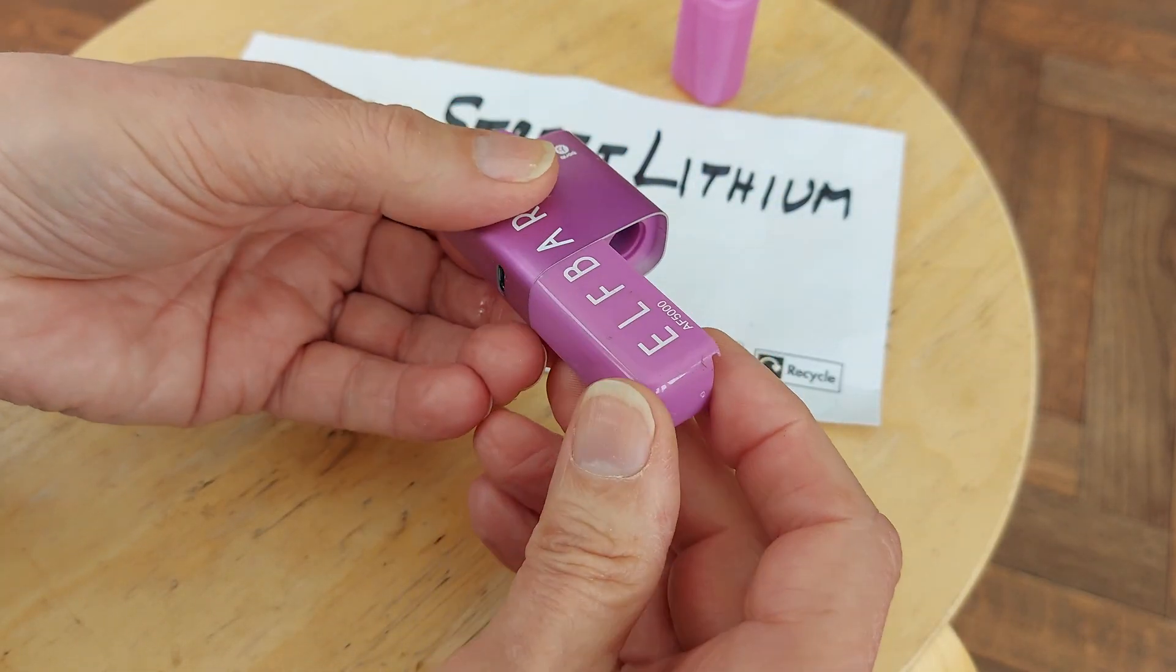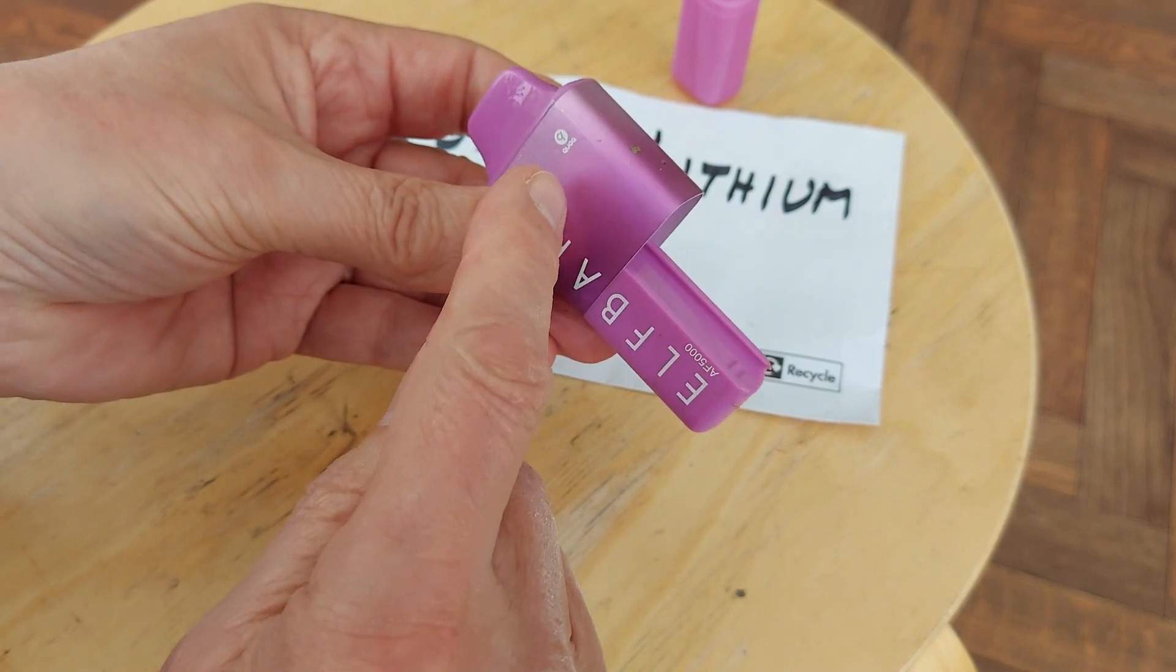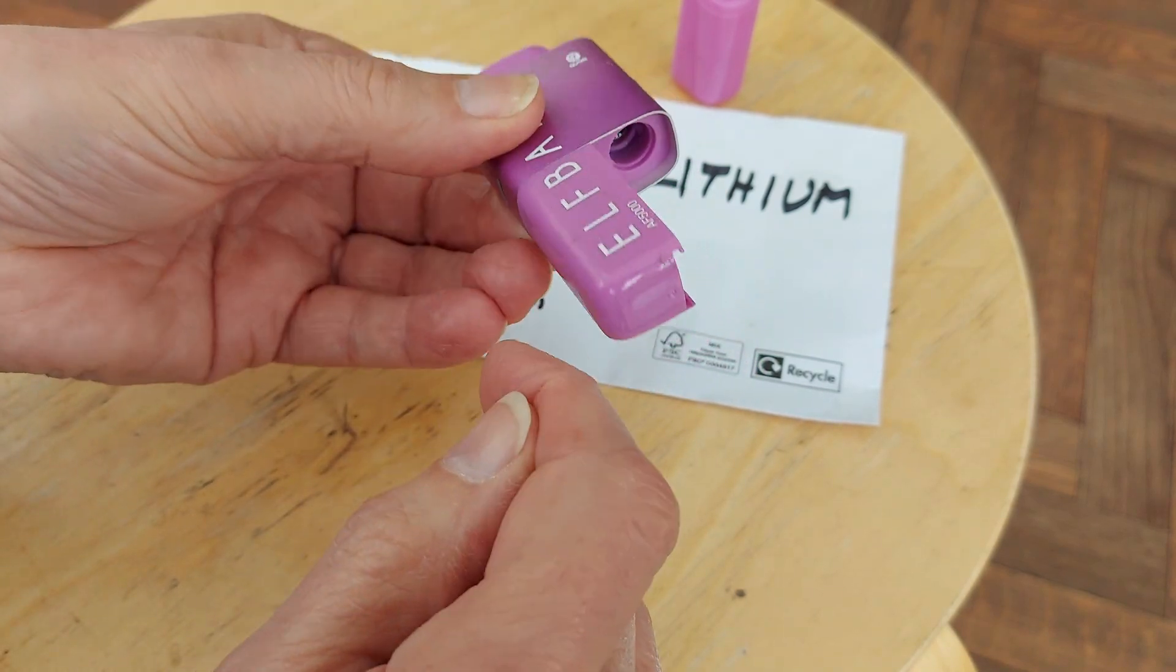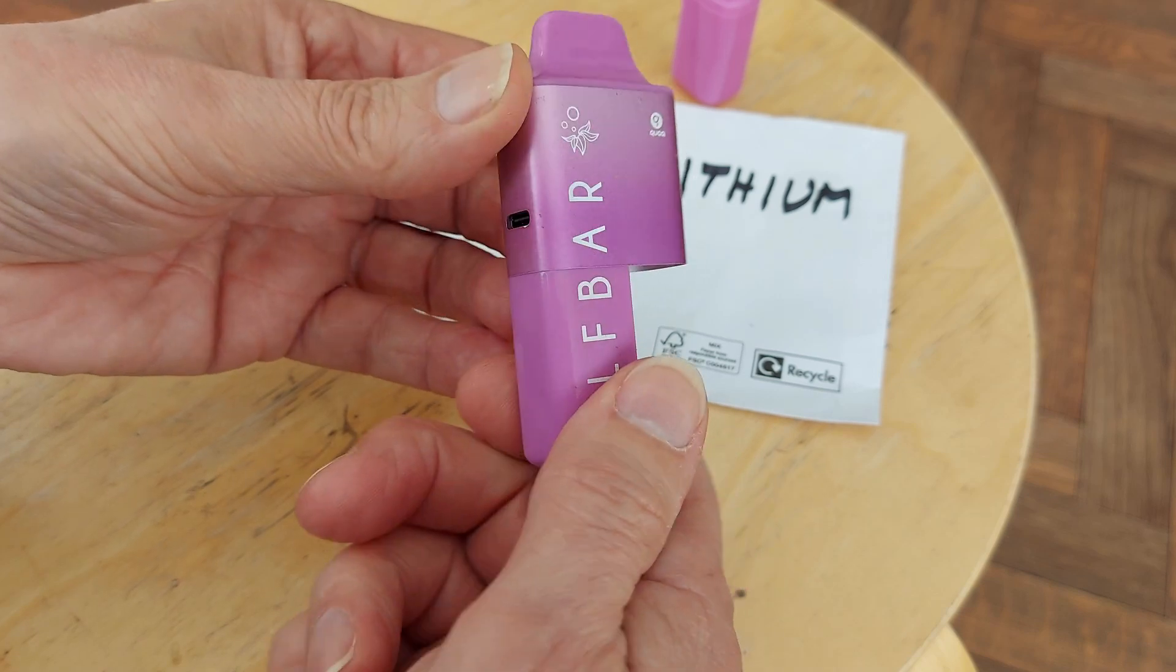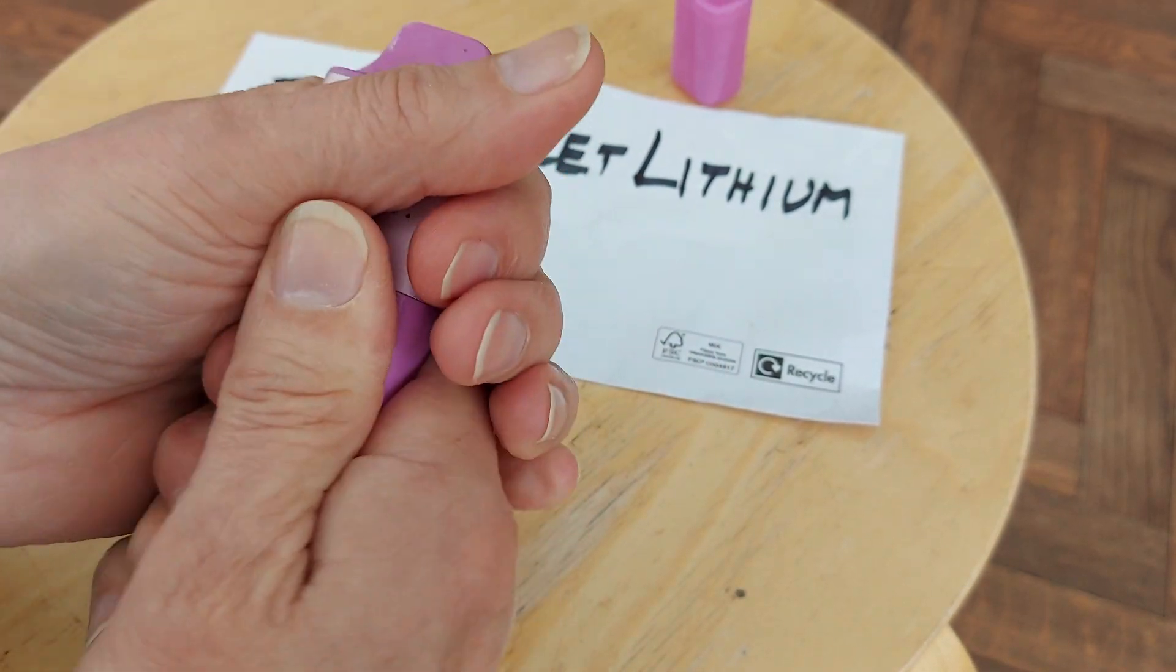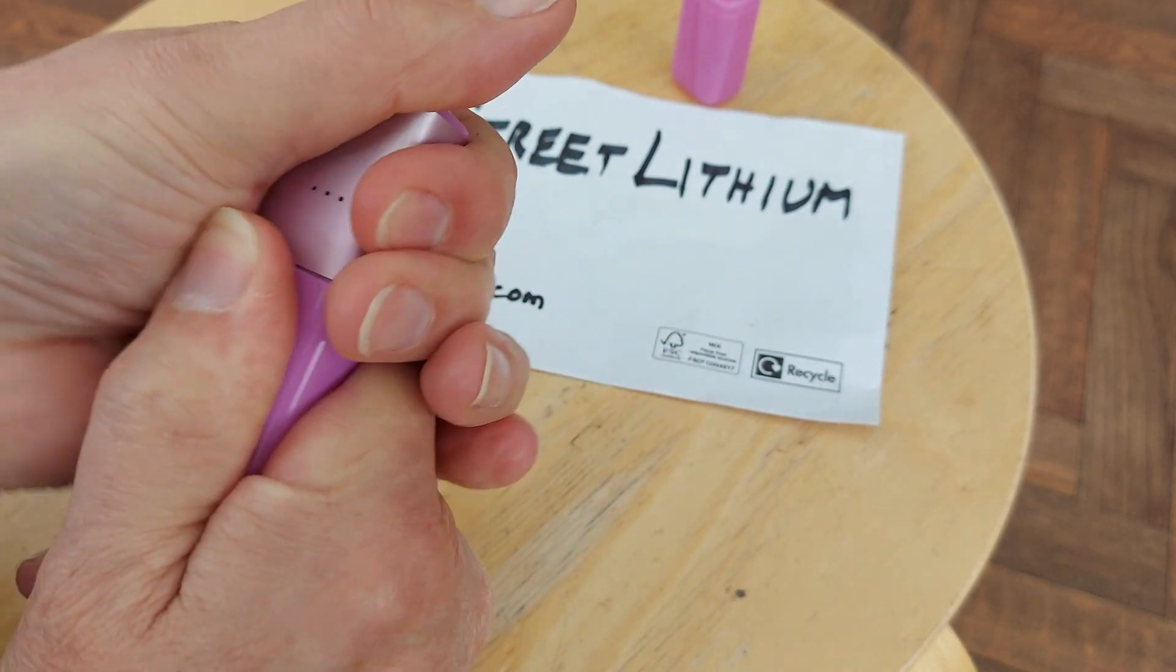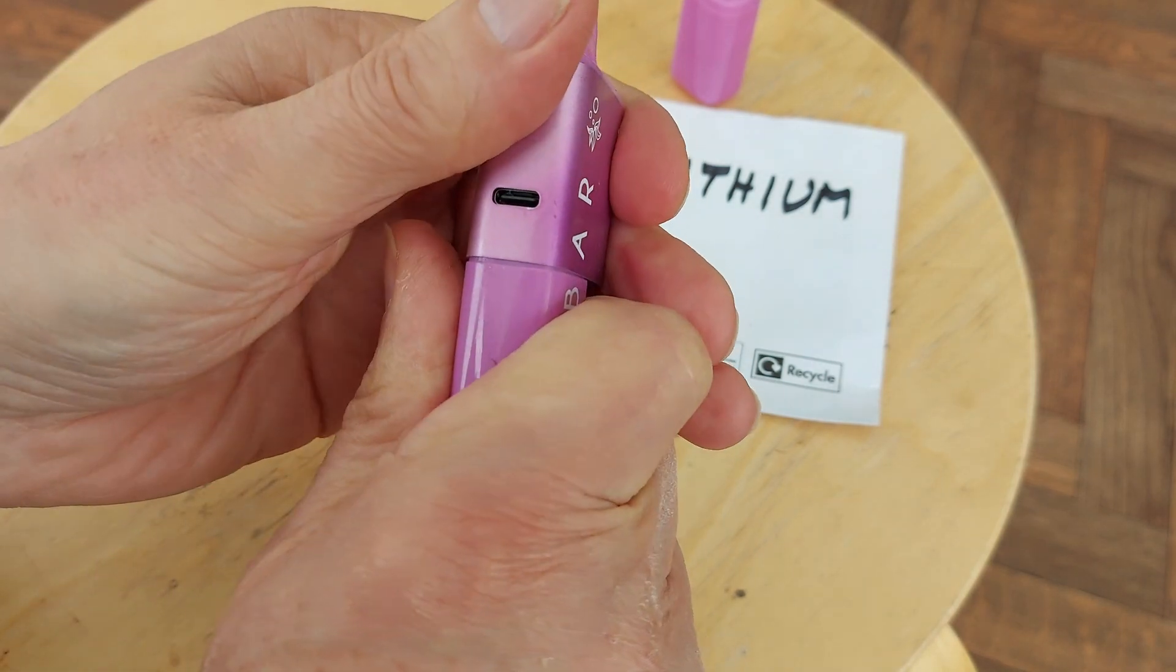Obviously the bit that I'm really interested in is the recharging. Now I'm looking at the shape of this, I'm guessing the battery might be in there. It's not going to come apart, oh it might, it's giving way a bit, there's a gap there.